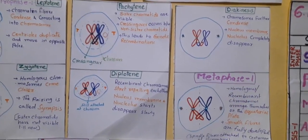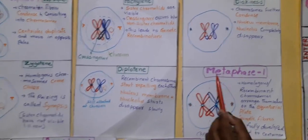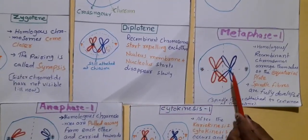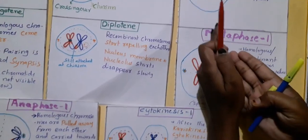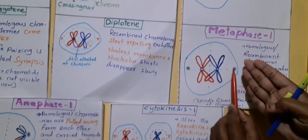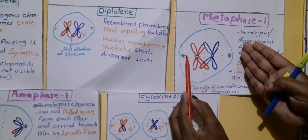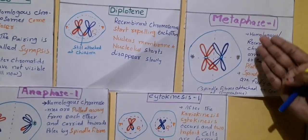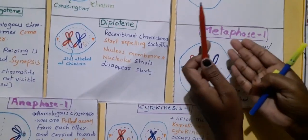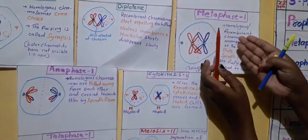The cell then goes into Metaphase 1. In Metaphase 1, 'meta' means middle — the homologous or recombinant chromosomes arrange themselves in the equatorial plate. Spindle fibers are fully developed and they attach to the centromeres of the cell. So in Metaphase 1: recombinant chromosomes are arranged in the equatorial plane and spindle fibers are formed.